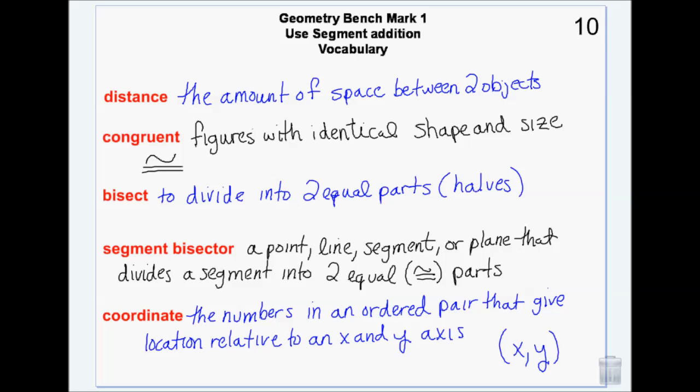Distance is the amount of space between two objects. Miles, for example, measures the amount of space between two far-away objects. Congruent means the exact same shape and the exact same size — the symbol is an equal sign with a tilde over top, and two congruent figures are identical in every way. To bisect is to divide into two equal parts — to cut things into halves. A segment bisector is any point, line, segment, or plane that divides a segment into two equal congruent parts.